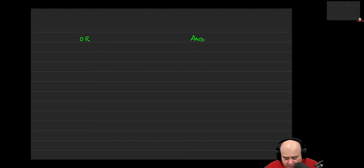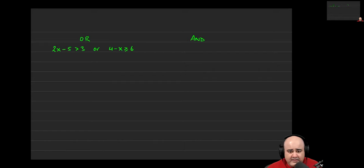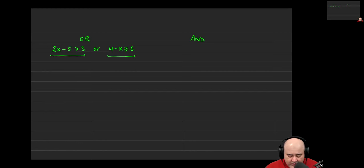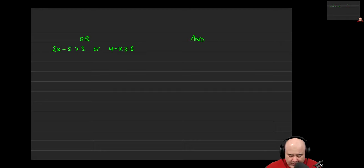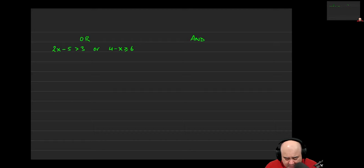Let's do an example with OR. Say we have: 2x minus 5 is greater than 3, OR 4 minus x is greater than or equal to 6. We're trying to figure out for which values of x either the first or second inequality is true — or maybe both. What values of x can we plug into either inequality and get a true statement? We solve them independently, just as separate problems, and then use the word OR when we graph the results.